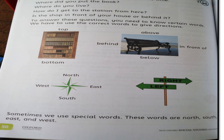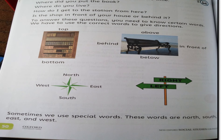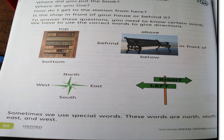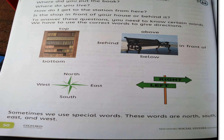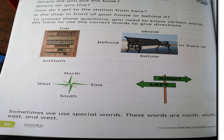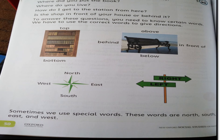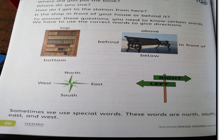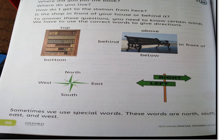So directions like top, bottom, above, below, in front of, and behind tell us the placement or position of any object or person. Apart from these, the most commonly used directions are left and right. Here are two arrows pointing towards left and right.